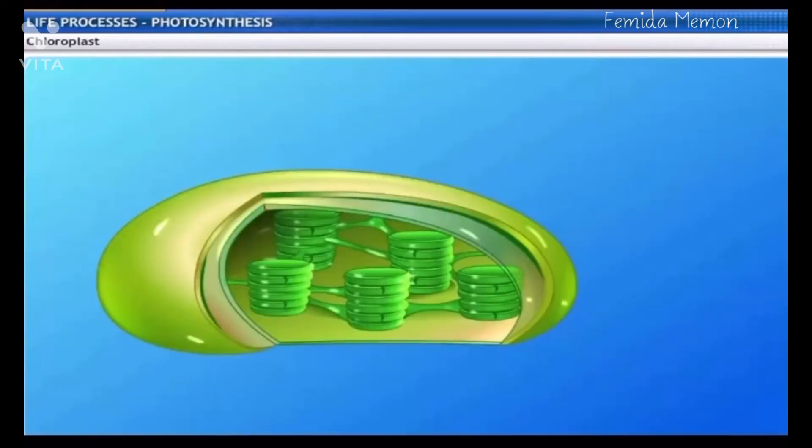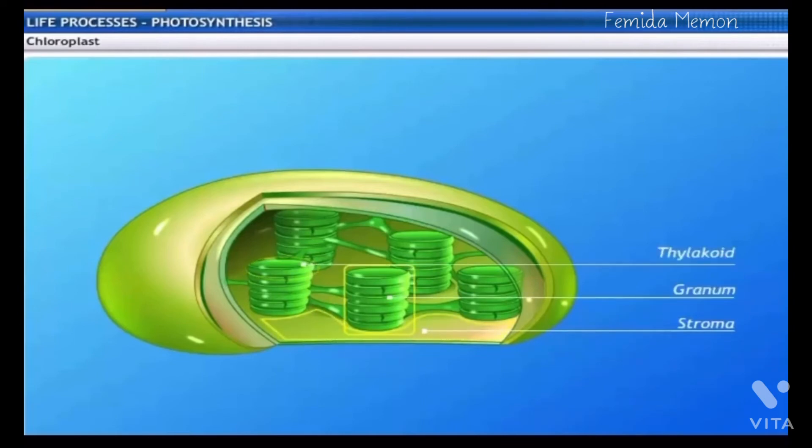Chloroplasts are bound by double membrane. They contain closely packed flattened sacs called thylakoids arranged in piles called grana. These grana lie in a colorless ground substance called stroma. Thylakoids contain a pigment called chlorophyll which traps solar energy.